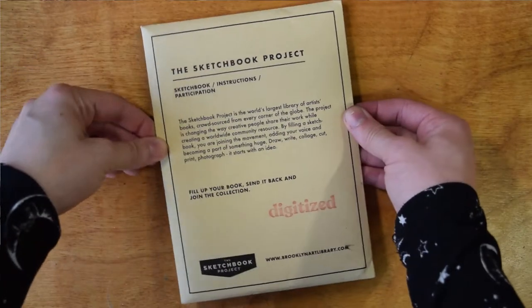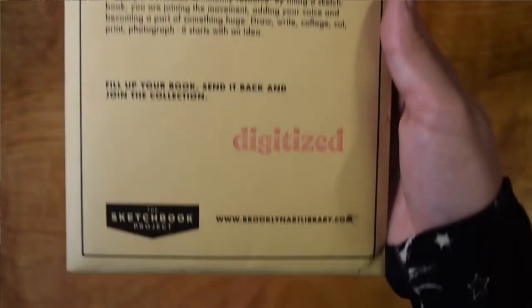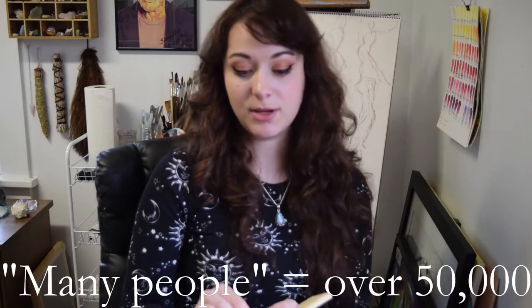Basically the sketchbook project is run by the Brooklyn Art Library. You pay to purchase one of their sketchbooks as well as a right to have that sketchbook in their space in Brooklyn, New York. This is a project that anybody around the world can do and that many people already have. So what basically I'm going to do is hopefully finish this on time, fill it full of whatever. If I get this postmarked on time, it will go into the bookmobile and do a little tour.